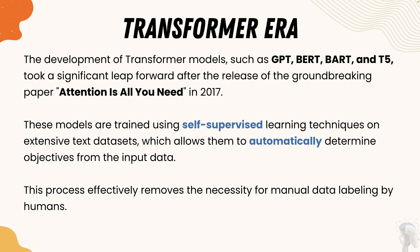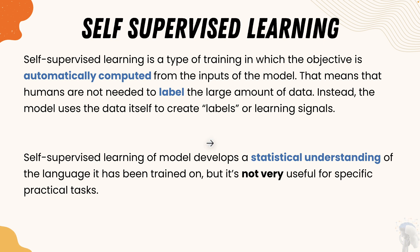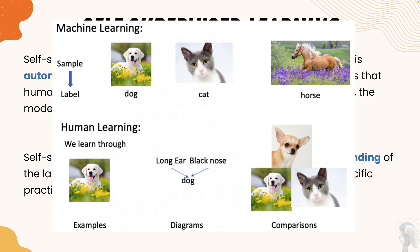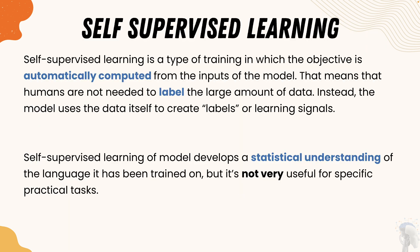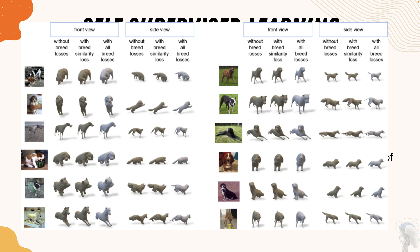Self-supervised learning is a type of training in which the objective is automatically computed from the input of the model, meaning humans are not needed to label large amounts of data. Instead, the model uses the data itself to create labels or learning signals. For example, given the word 'cat,' the machine labels it as an animal with four legs, fluffy, with two ears, used as a pet. Similarly for 'dog' — it recognizes it as a pet animal with four legs, fluffy in some breeds, lives with humans, and is an ancestor of wolves.